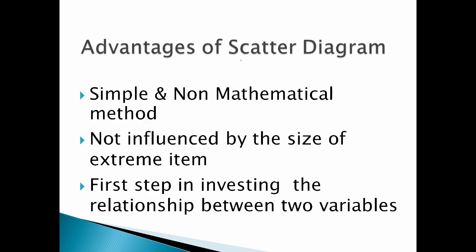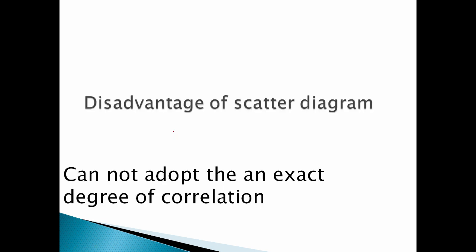The advantage of a scatter diagram is that it is mathematically simple. An outlier means an error or random noise that influences the result and can be seen clearly on the scatter diagram — it shows the same relationship. The disadvantage is that it cannot give the exact degree of correlation.